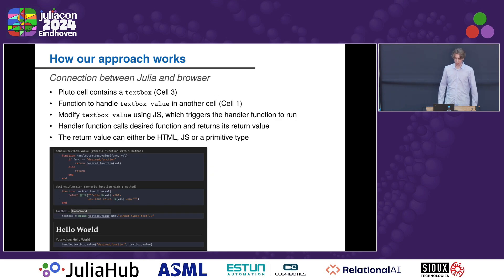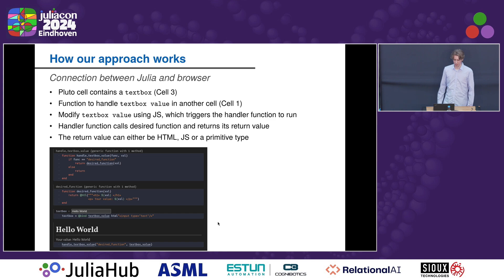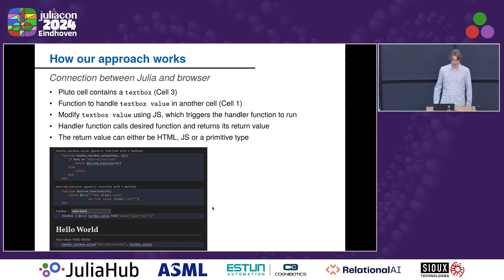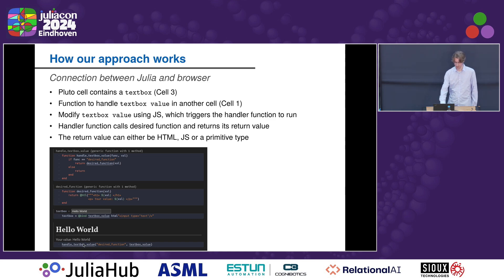Now the most important — and most technical — part: how do we create a connection between Julia and the browser so we can use JavaScript from Julia? First, we create a Pluto cell that contains a text box — you can see that in cell three. Then we have a function to handle the text box value, which is just a variable that holds that value. When we modify the text box value with JavaScript — in this case writing 'hello world' — it triggers the handler function to run because Pluto is reactive. When the text box value changes, this cell gets re-evaluated and calls the handle text box value function.